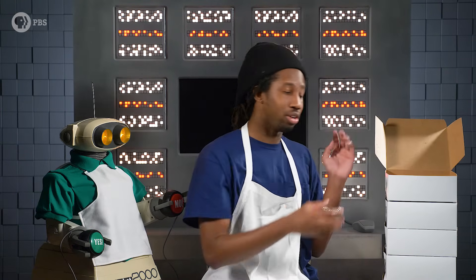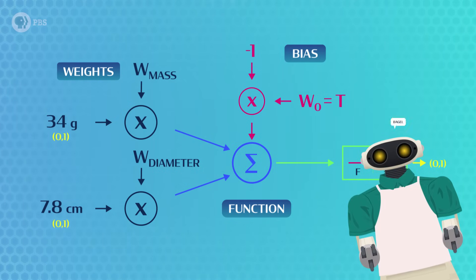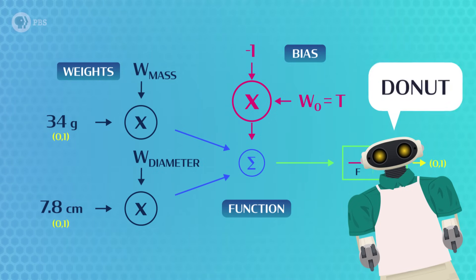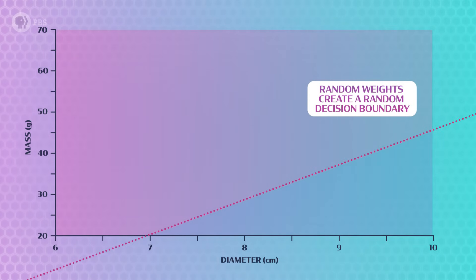John Greenbot's Perception program is using a step function, so it's an either-or choice: zero or one, bagel or doughnut, completely right or completely wrong. This first item has a mass of 34 grams and a diameter of 7.8 centimeters. The Perceptron takes these inputs, multiplies them by their respective weights, then adds them together. If the sum is greater than the bias — the threshold for the neuron firing — John Greenbot will say 'bagel.' If the sum is less than the bias, it hasn't crossed the bagel threshold and he'll say 'doughnut.' We can visualize this as a graph with mass on one axis and diameter on the other. The weights and bias calculate a decision boundary on the graph, which separates bagels from doughnuts. This data point at 34 grams and 7.8 centimeters is above the decision boundary, in the bagel zone.